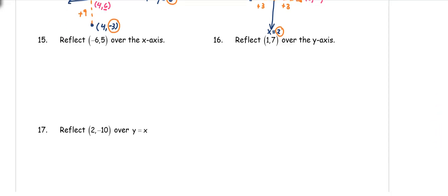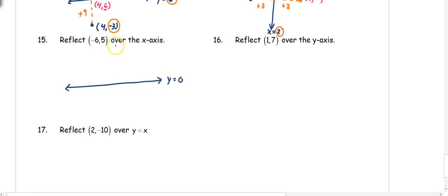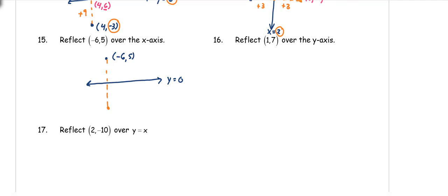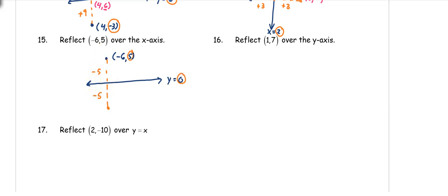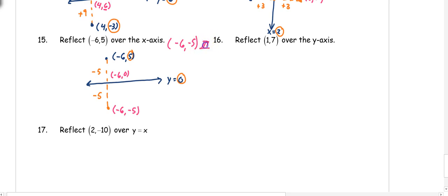Number 15: reflect over the x-axis, which is y equals 0. The point is (-6, 5), located above the axis. To get from 5 to 0 in the y coordinate, subtract 5. Subtract 5 again: first landing at (-6, 0), then (-6, -5). So the reflected point is (-6, -5), which is in the third quadrant since both coordinates are negative.